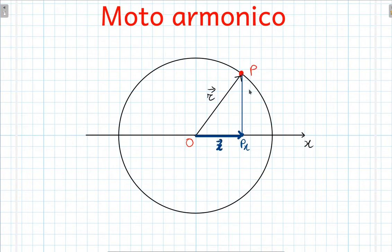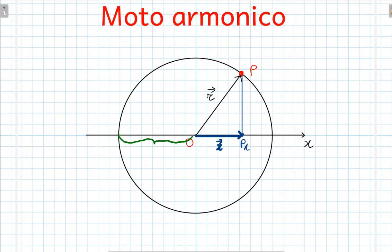Immaginate cosa può succedere quando il punto P si va spostando sulla circonferenza. La sua proiezione in qualche modo segue e si muove lungo un segmento che sta sull'asse X, un segmento la cui lunghezza è pari al raggio moltiplicato per 2, cioè pari al diametro. Abbiamo quindi un nuovo tipo di movimento: il movimento di questa proiezione, che avviene su una sola dimensione, non sul piano. Il movimento di questo punto viene chiamato per definizione armonico.